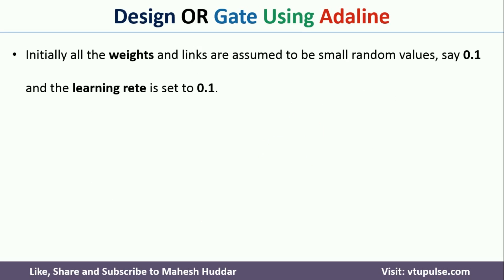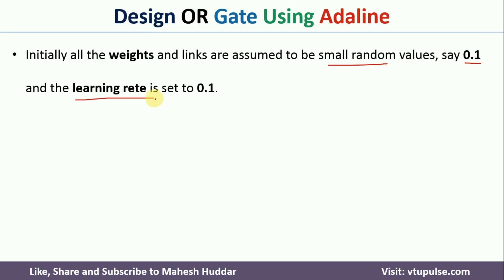The OR gate has two inputs, so we need two weights. I will set those weights to a small random number — let us say 0.1 in this case. It is not mandatory that we set it to 0.1; you can set different random values. We also need a learning rate, which I will set to 0.1. Again, you can set a different value.